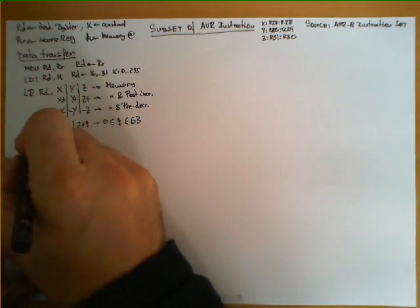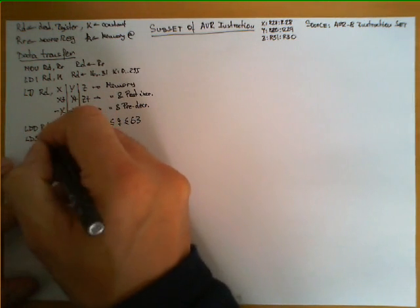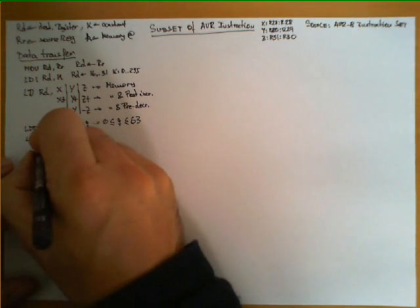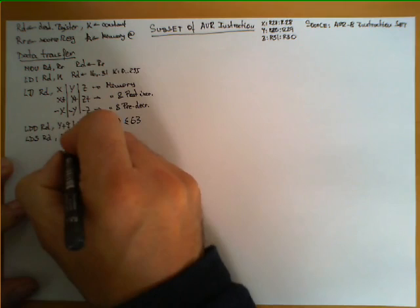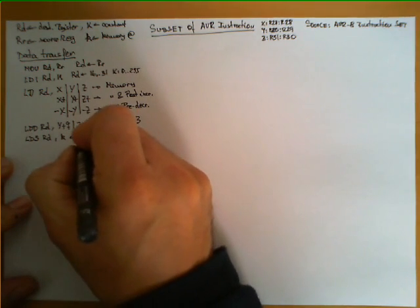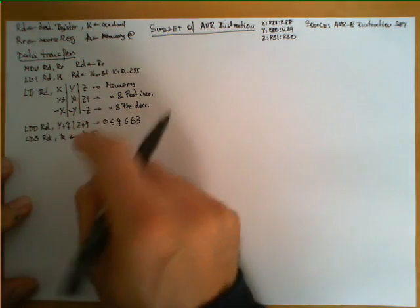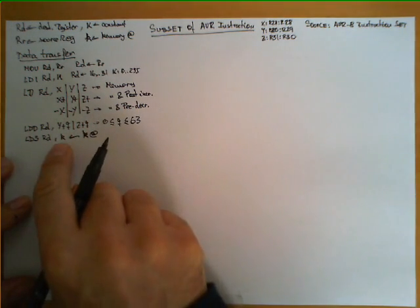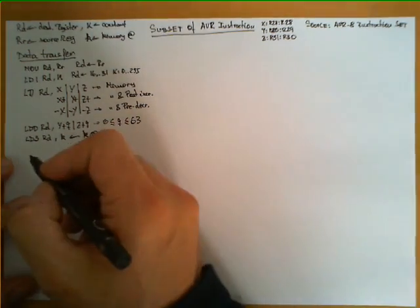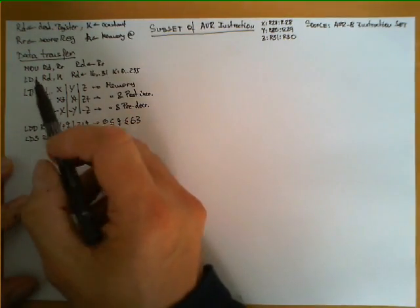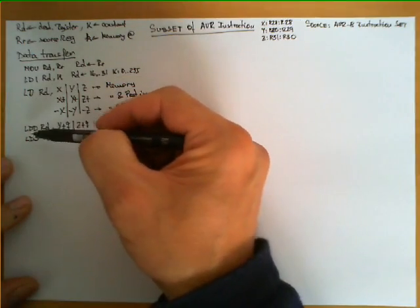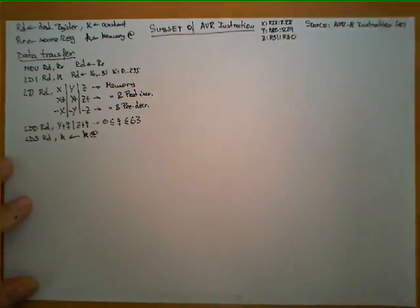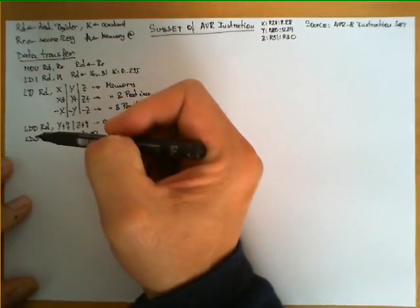Another data transfer instruction is LDS, which is very intuitive. K is a memory address, so we simply go to memory at the position specified by K and bring that value into the register. LD, LDD, and LDS all bring data from memory into a register.